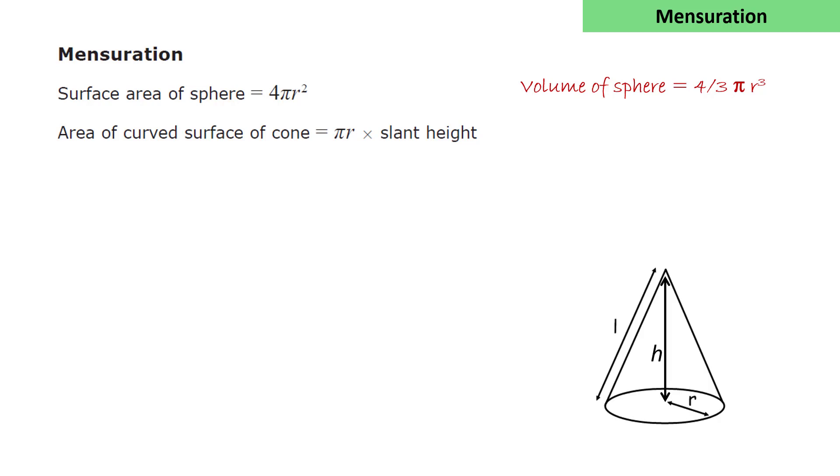You're given the area of the curved surface of a cone, πrl, the slant height. You're not given the volume, 1/3 πr²h.